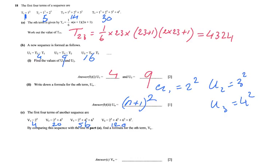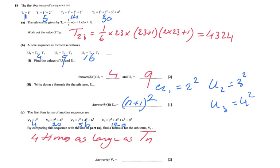That is an investigation question — you just have to investigate. First I look for a constant addition, which is not the case. Then I look for a multiplication, and indeed it's multiplied by 4 every time. So Vn = 4 × Tn. Since Tn = (1/6)n(n+1)(2n+1), we get Vn = (4/6)n(n+1)(2n+1), which simplifies to Vn = (2/3)n(n+1)(2n+1).